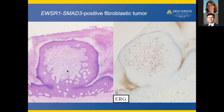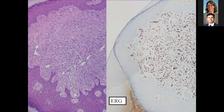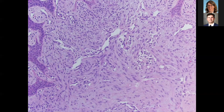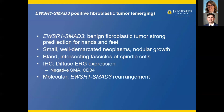The next tumor is a new entity called EWSR1-SMAD3 positive fibroblastic tumor. At low power, you see a small nodule in an acral location with diffuse ERG expression. Higher power shows very bland spindle cells, diffusely and strongly positive for ERG, with no mitotic activity — kind of bland fibroblastic spindle cells. It is benign, with a strong predilection for the hands and feet. They are small, well-demarcated neoplasms with a nodular growth pattern and intersecting fascicles of spindle cells. The key is this diffuse ERG expression; it is not SMA positive nor CD34 positive, and it harbors the EWSR1-SMAD3 rearrangement.